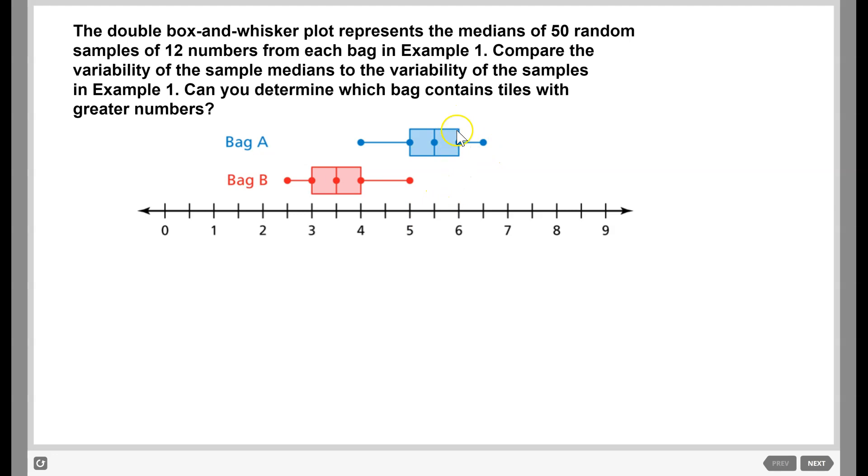Starting there, our IQR for bag A, 6 minus 5 is 1. So in other words, 50% of our data here is within 5 and 6. That's very little variability and much closer together, compared to our IQR last time of 3. And for bag B, the IQR is 4 minus 3, which is also 1.